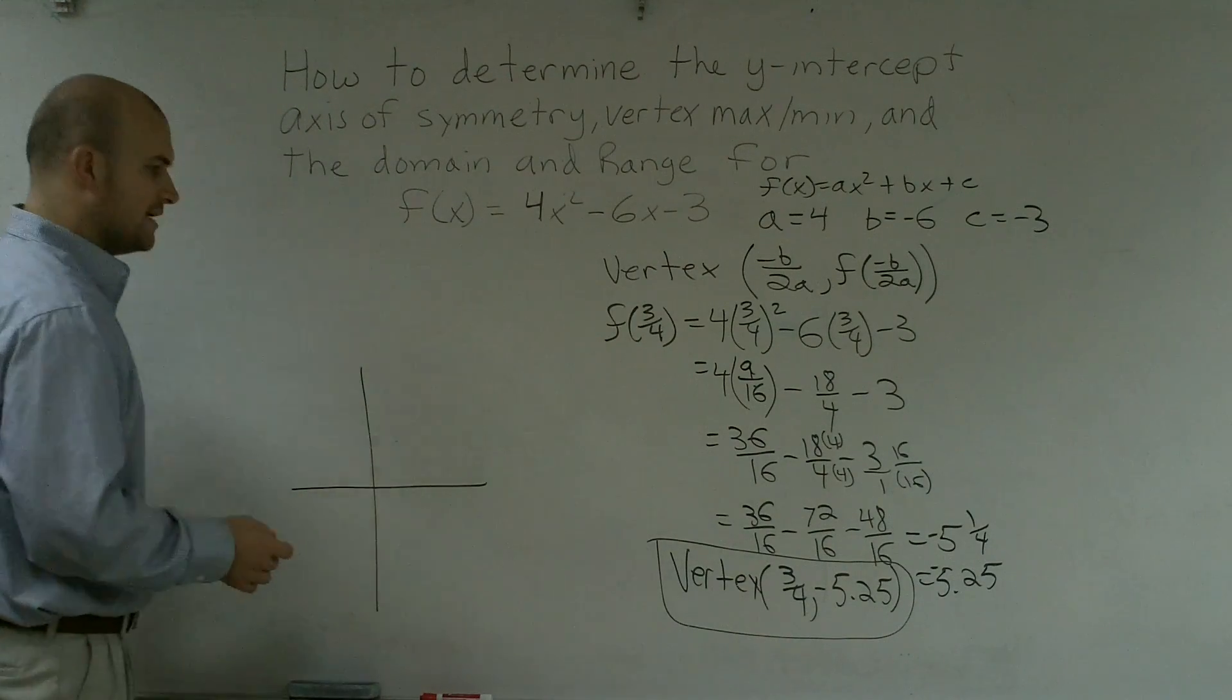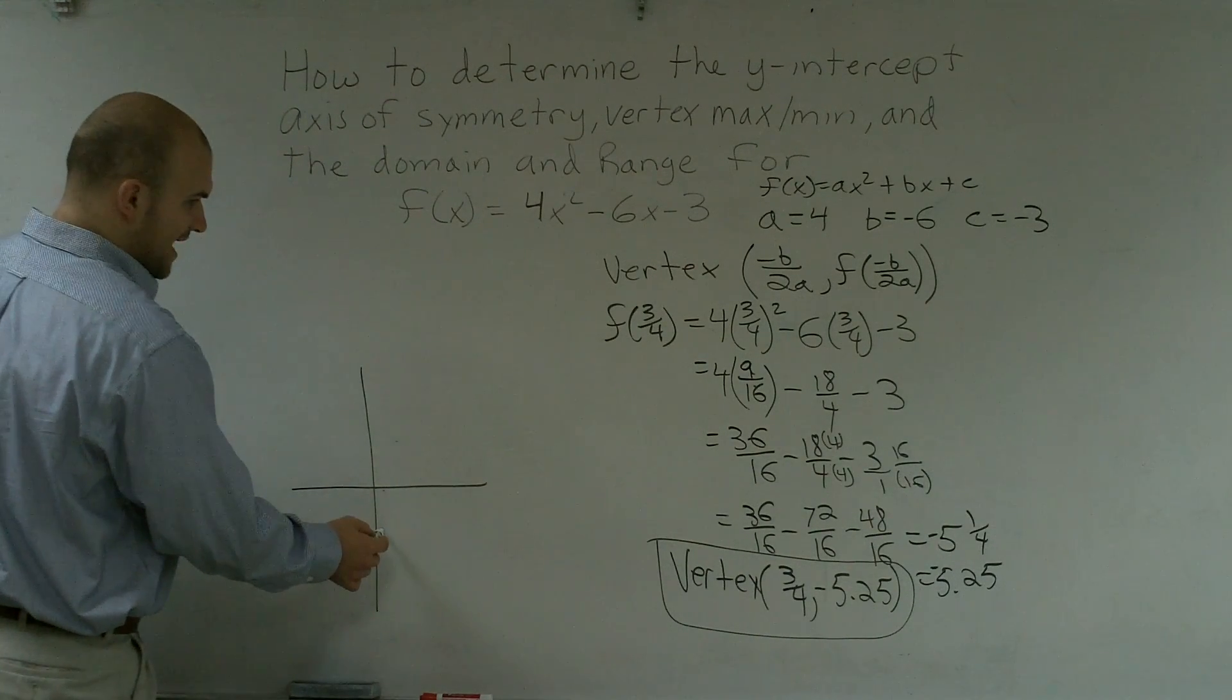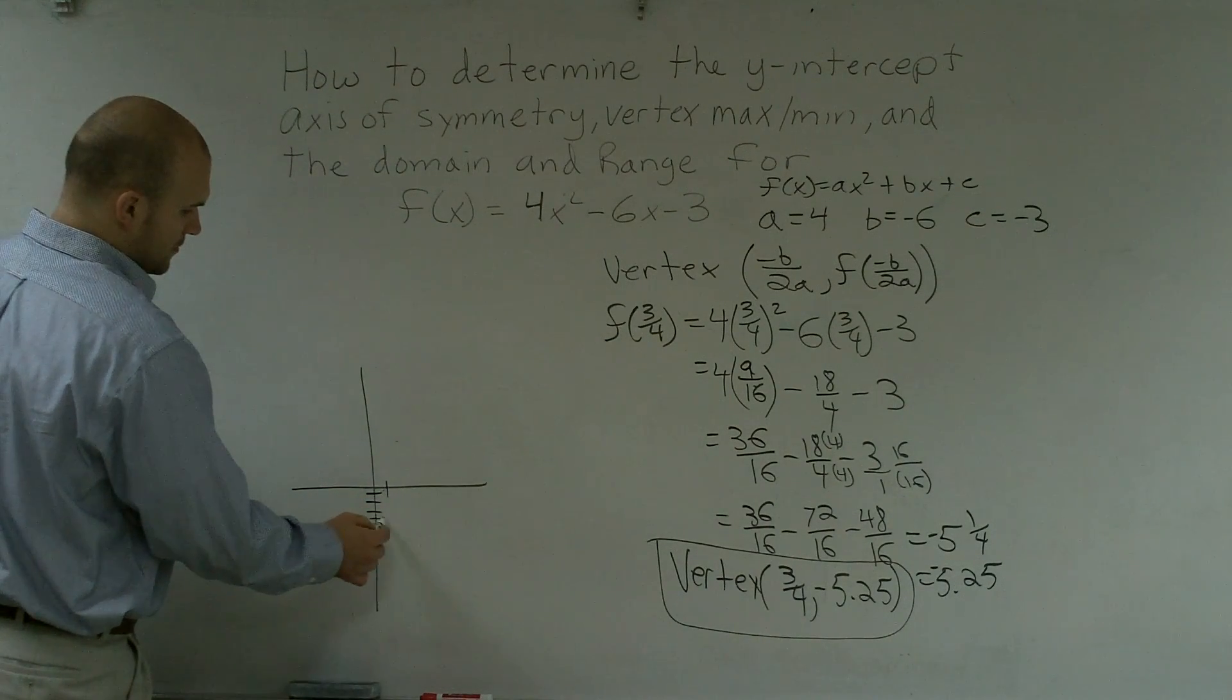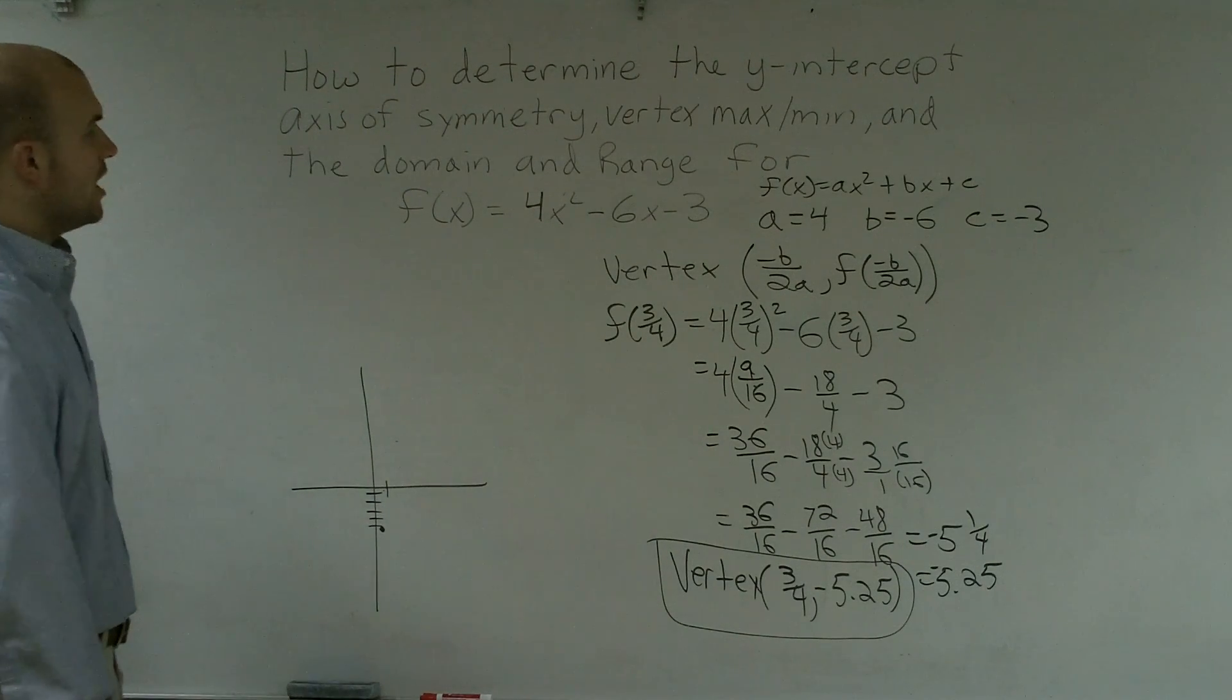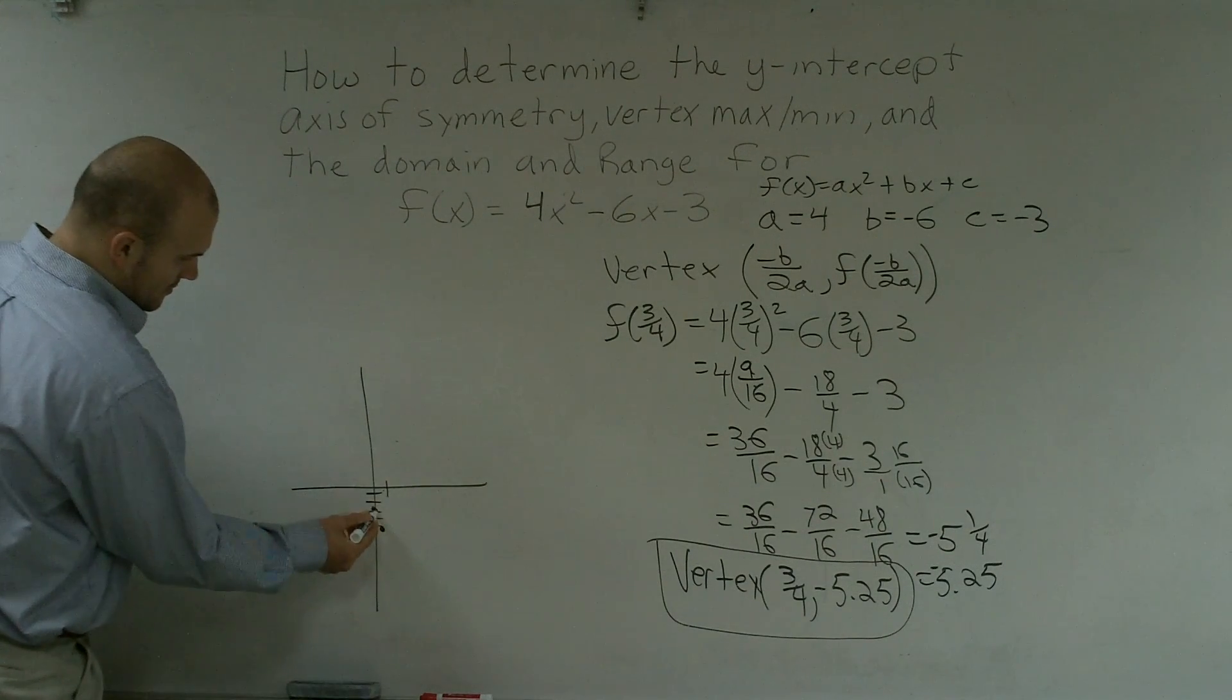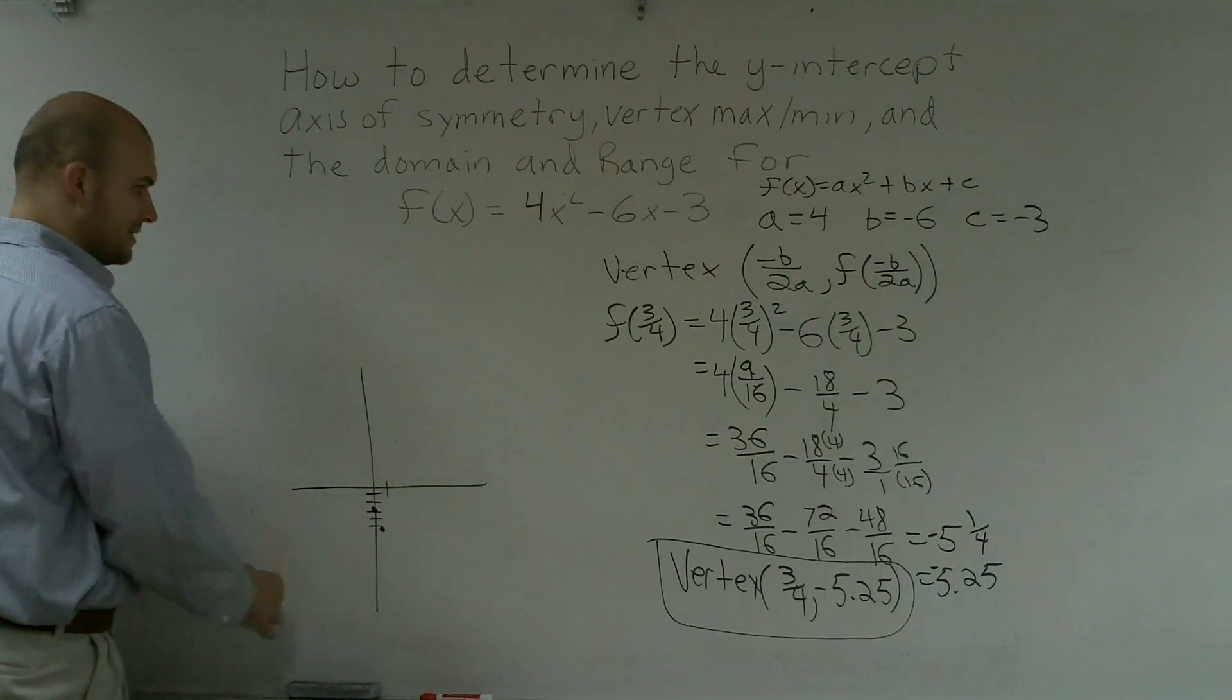If I was going to write this graph, all I know is the vertex is at 3/4, -5.25, which is roughly, I'm just going to put, like, somewhere right there. And we know that it crosses the y-intercept at, what was the y-intercept at? Does anybody remember? -3. -3. Okay. So right now I have no idea what this graph. I don't know if it goes down like this or it goes up like there.